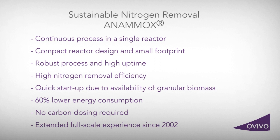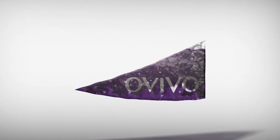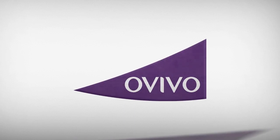The availability of granular Anamox biomass allows a quick start-up of the process. Compared to conventional processes such as combined nitrification and denitrification, the Anamox process has the lowest cost of ownership and provides a 60% savings on energy consumption and CO2 emissions. No carbon source is needed for denitrification. Backed with extensive full-scale operational experience since 2002, the Anamox process is the proven and tested solution for the removal of ammonium.